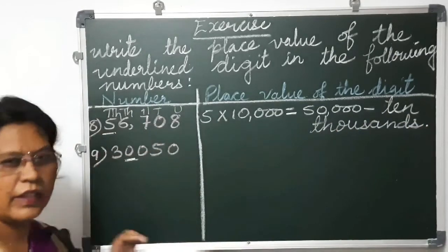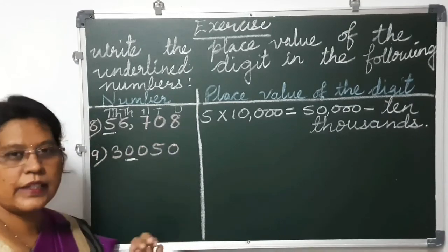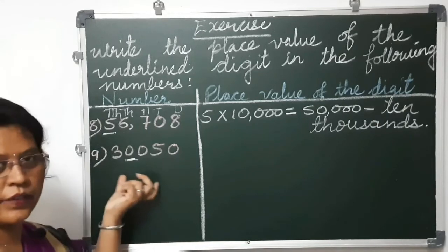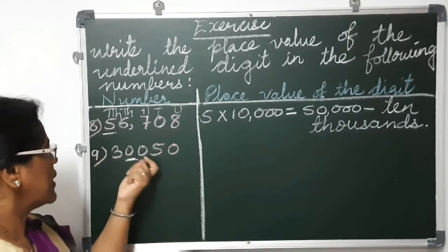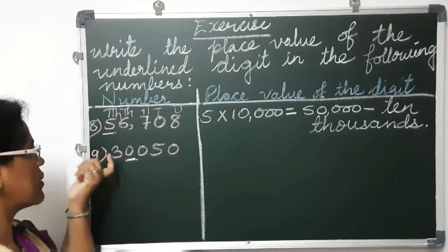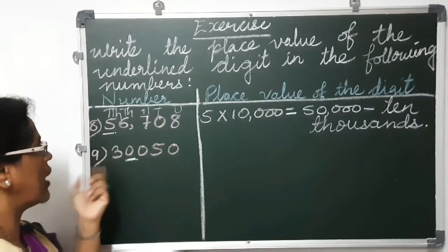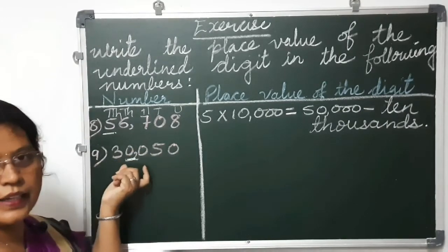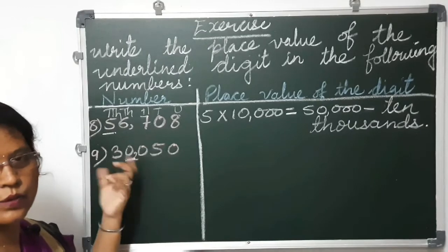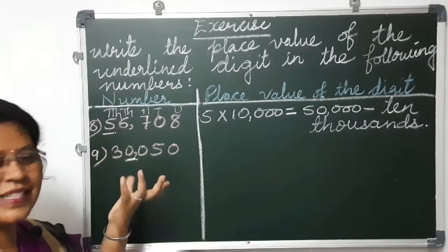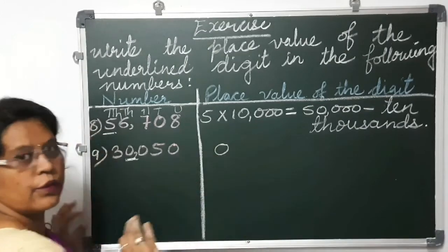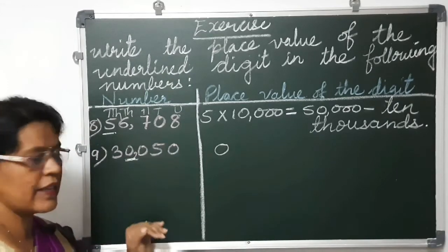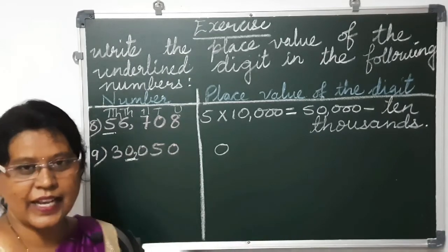Isn't it easy? If you concentrate and practice, you will find these sums very easy. Now the last sum of this exercise: units, tens, hundreds, thousands and 10,000. It is a 5 digit number — 30,050. The underlined digit is 0. So 0 into 1,000 is 0 — you can put 0 directly. So with these 9 sums, I have finished the exercise.